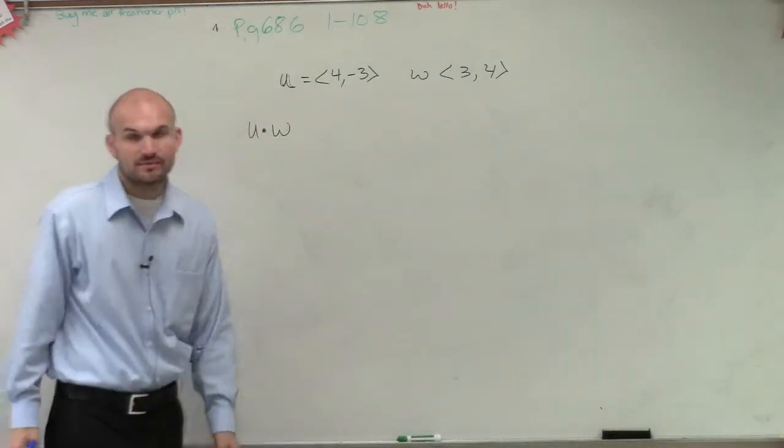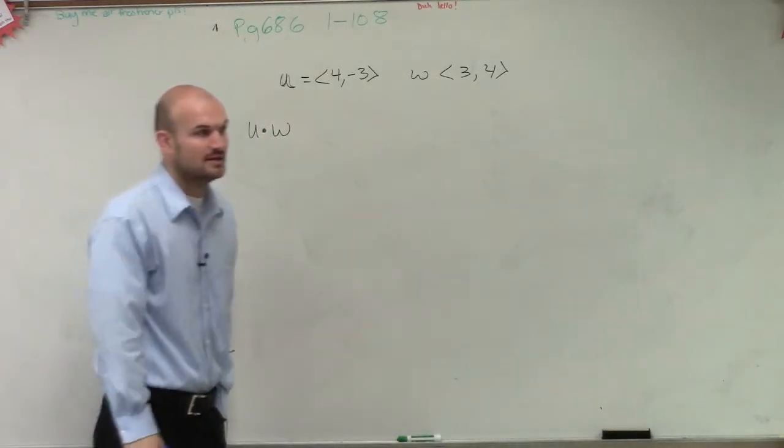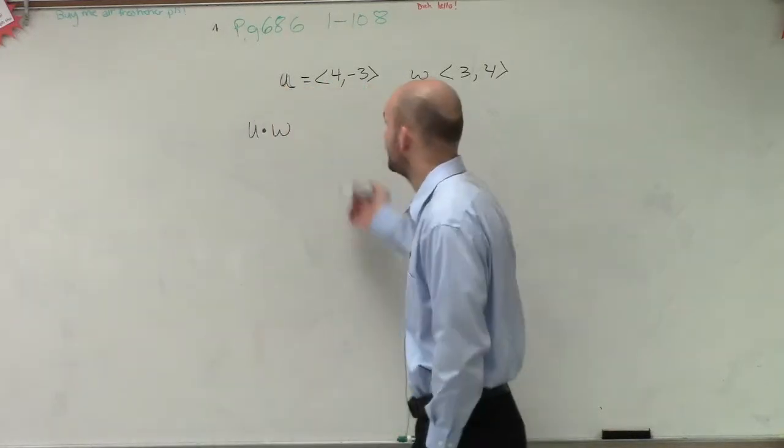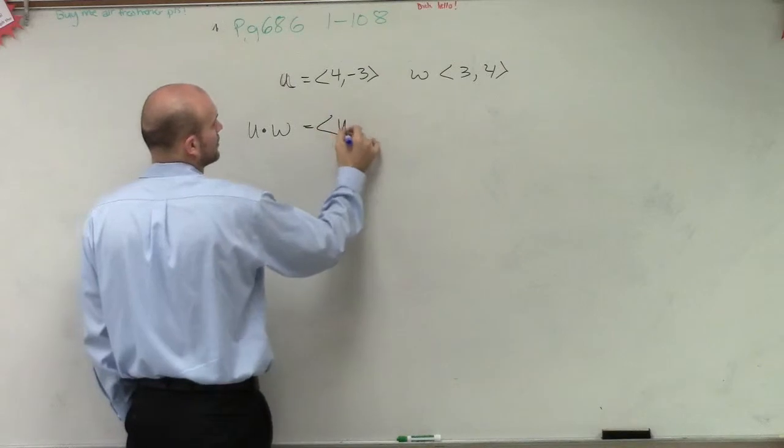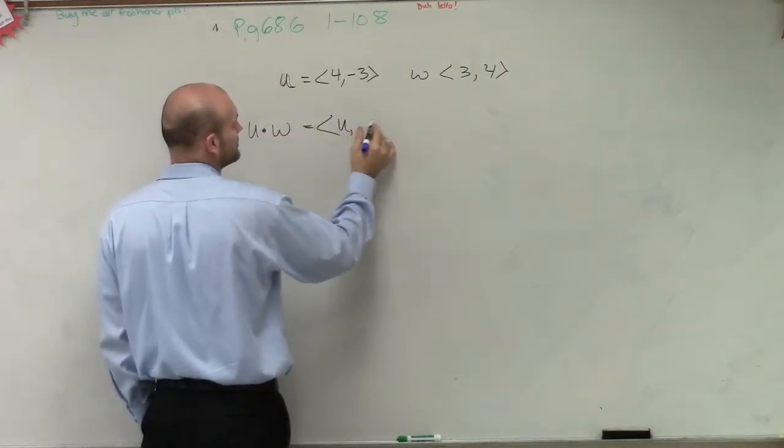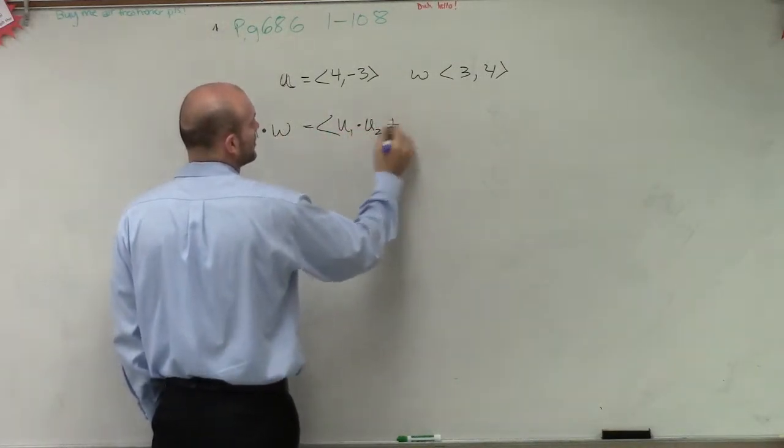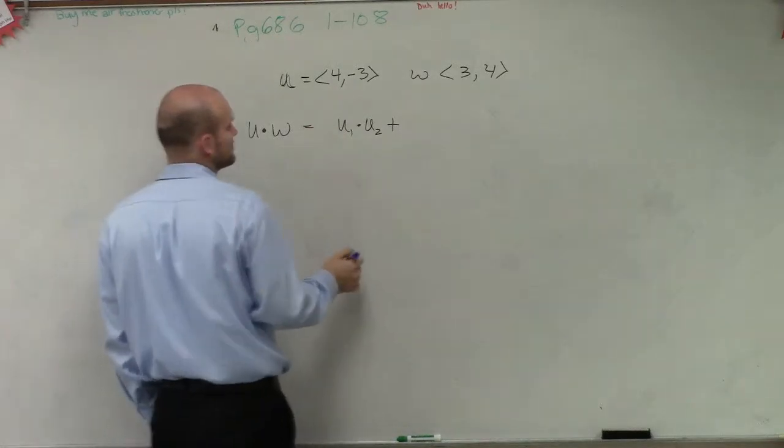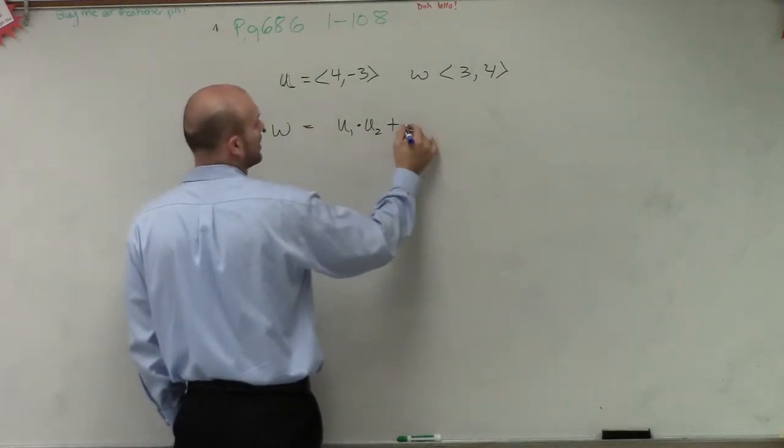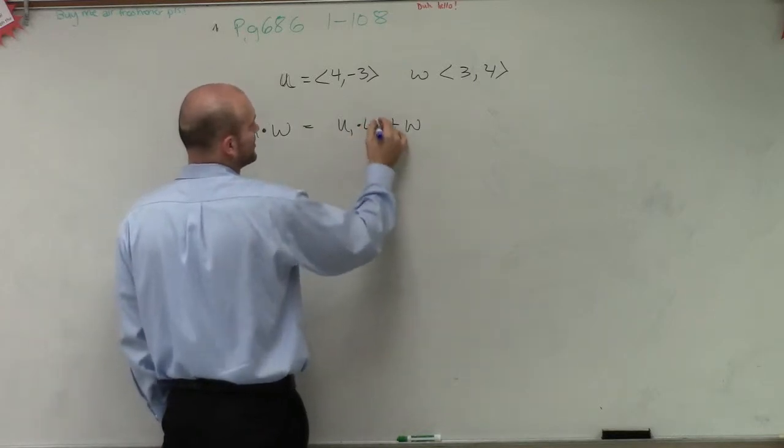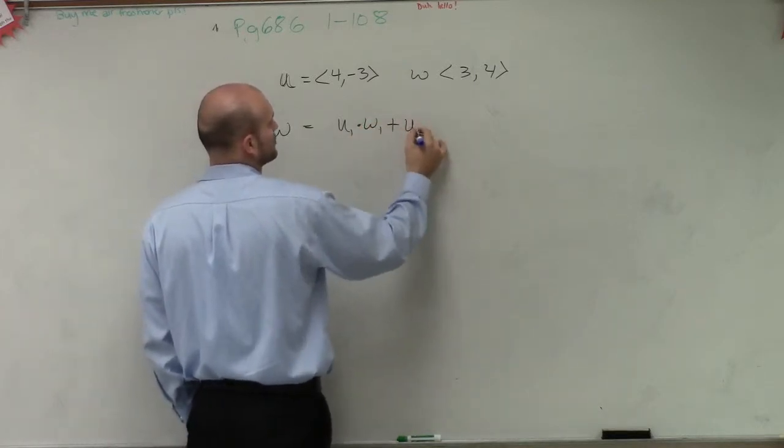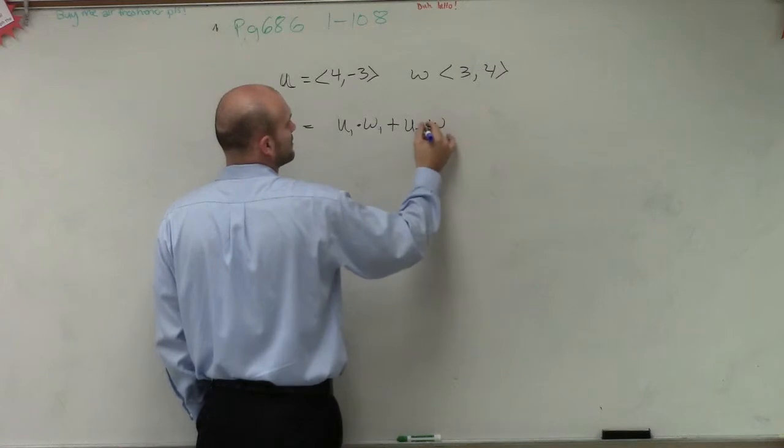So the first thing we need to remember is the dot product. The dot product between any two vectors is going to be u1 times w1 plus u2 times w2. It's a scalar, not a vector.